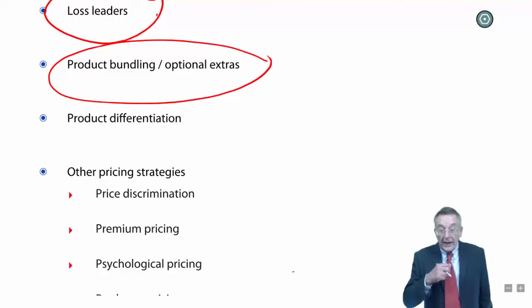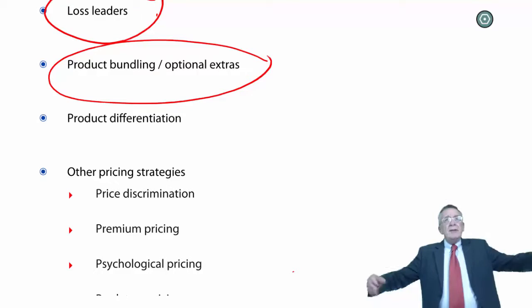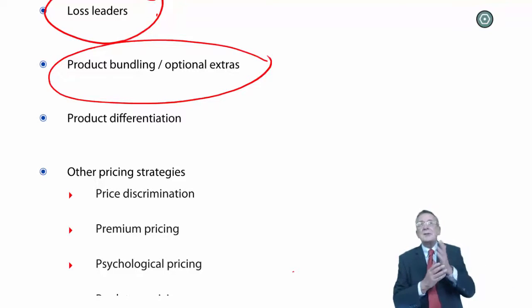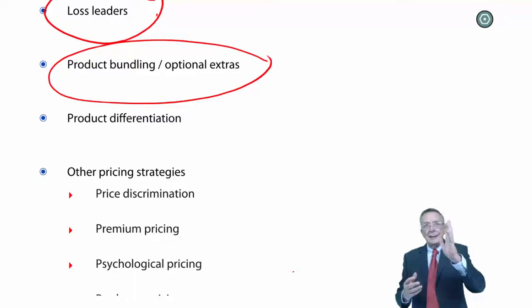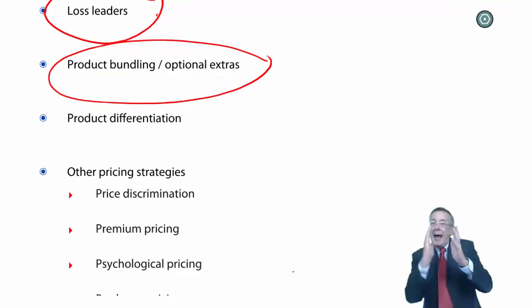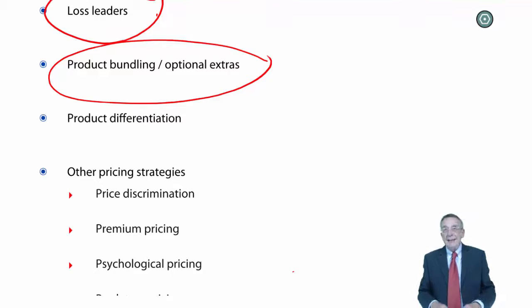Product bundling and optional extras, not quite the same, but more or less. Let me give you two examples. Have you ever seen, on sale, perhaps, a bottle of shower gel and the same company, a bottle of shampoo taped together? And if you buy the two together, it's cheaper than buying the two individually. That's an example of product bundling.